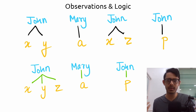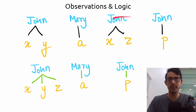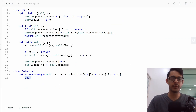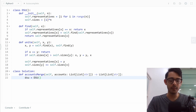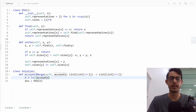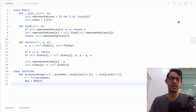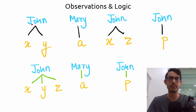We know we have to use DSU, but how? Since the goal is to figure out that two names refer to the same person, we want the ability to unite them. I'm going to initialize DSU with size N, where N is the length of accounts. So if we have John, Mary, John, John — four names — the DSU will have a size of four, and we'll track which Johns are really the same person.